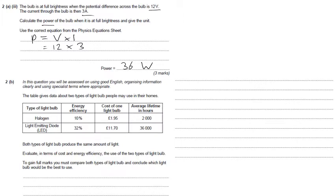Question 2B is a six mark written answer question, which relies on good use of English and spelling, punctuation and grammar. But it's about the comparison of different types of light bulb. And it asks us to evaluate in terms of cost and efficiency, the two types of bulbs. So if I were answering this question, I would first of all concentrate on cost.